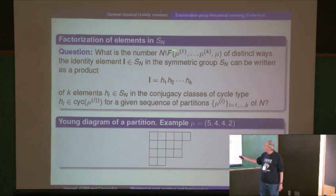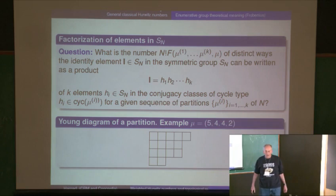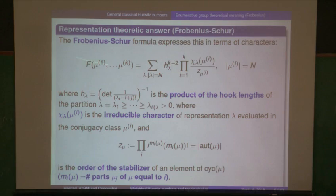So it's a function of k partitions, and there's a formula for it. There's nothing mysterious, but it's a difficult thing to calculate because you need to know all the irreducible characters of the symmetric group. Here's the formula — the Burnside-Frobenius formula. The only ingredient is the irreducible character, which depends on a partition in two places: lambda tells you which irreducible representation it is, and mu tells you the conjugacy class on which the character is evaluated.